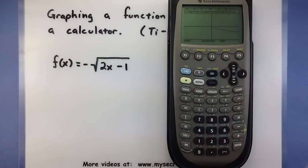I'm going to leave my window at negative 10 to 10 on my x and y axis, because I'm pretty sure that this is the graph of my function.